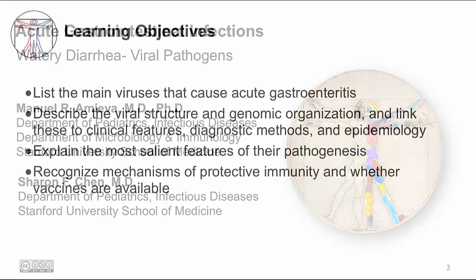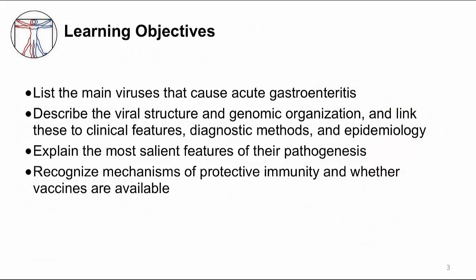In this video, we will discuss the main viral etiologies of watery diarrhea. The learning objectives are to list the main viruses that cause acute gastroenteritis, to describe the viral structure and genomic organization, and link these to clinical features, diagnostic methods, and epidemiology, to explain the most salient features of their pathogenesis, and to recognize mechanisms of protective immunity and whether vaccines are available.